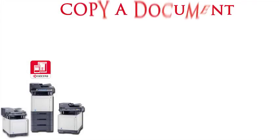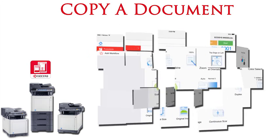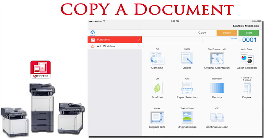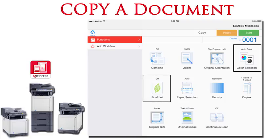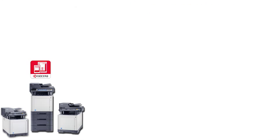MyPanel is configured to process a copy or scan job with documents placed in the document feeder or on the platen of the device. Users can then set various copy options such as color selection, eco-print, and duplex. All copy options can then be saved as a workflow to be used at a later time in order to streamline processing.